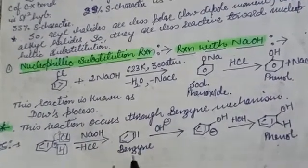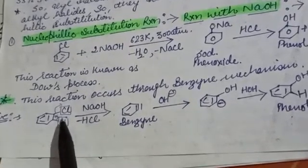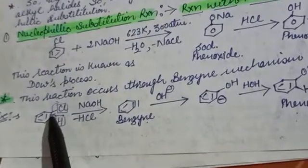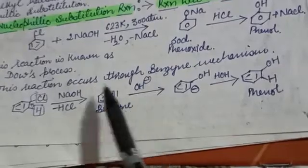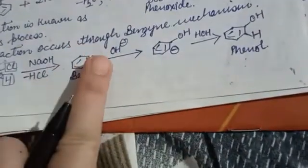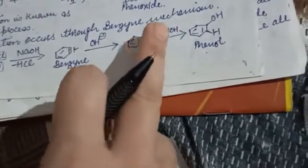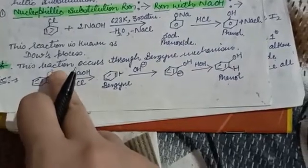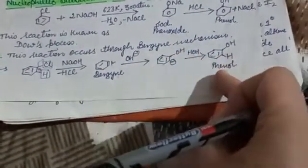This reaction is called benzyne mechanism. How is this reaction mechanism? Look at the benzene ring with chlorine. When you add NaOH, first HCl goes out and hydrogen and chlorine are removed. What happens here is a triple bond forms, so benzene becomes benzyne. Then this bond will break when NaOH attacks, and you will get phenol. This mechanism through benzyne intermediate is known as benzyne mechanism.